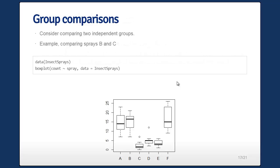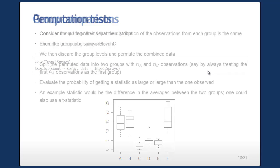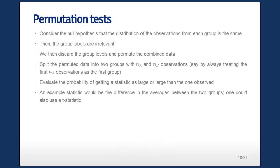Let's move to another resampling procedure: permutation tests. Consider comparing two independent groups — for example, the insect spray groups labeled A through F, and we want to compare them two at a time. The null hypothesis is that the distribution of observations from each group is the same — that the spray label is irrelevant and observations are exchangeable within levels of insect spray.